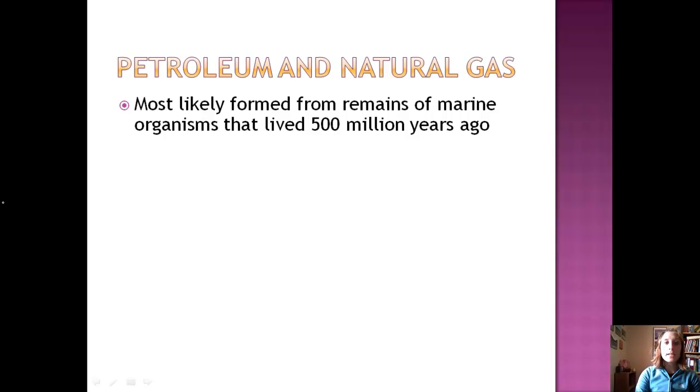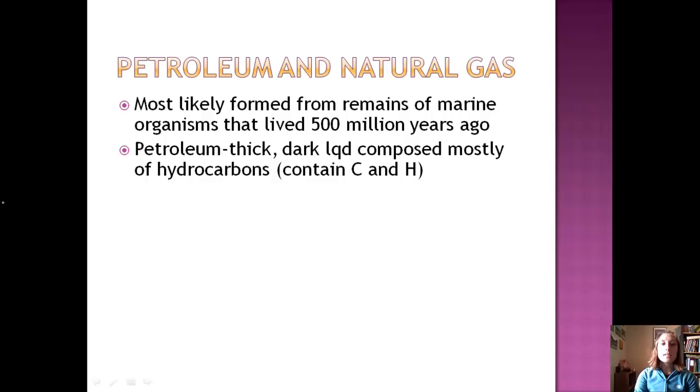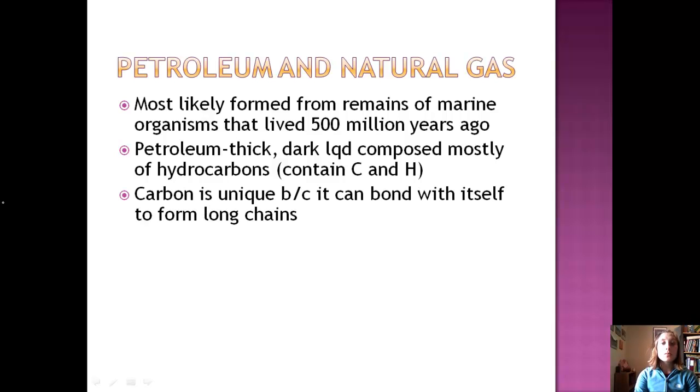Let's look at petroleum and natural gas. These are most likely formed from the remains of marine organisms that lived 500 million years ago. Petroleum is a thick, dark liquid composed mostly of what are called hydrocarbons. Hydrocarbons are basically chemical compounds that contain carbon and hydrogen. Carbon is really unique because it can bond with itself to form long chains, and when we say we have an organic compound, we usually mean something made up of carbon and hydrogen in these really long chains.